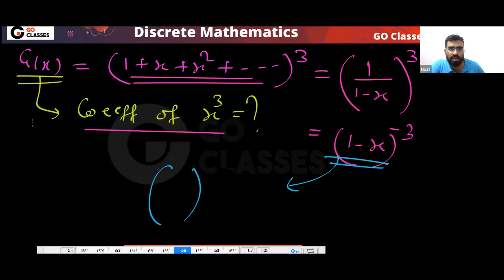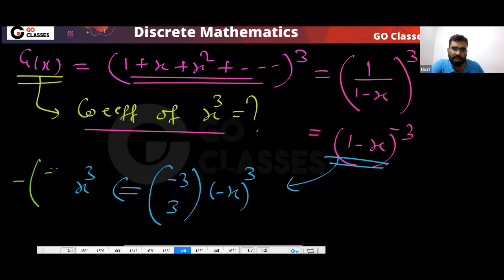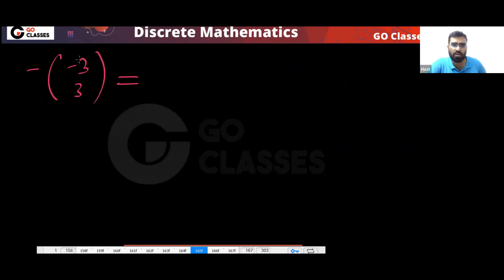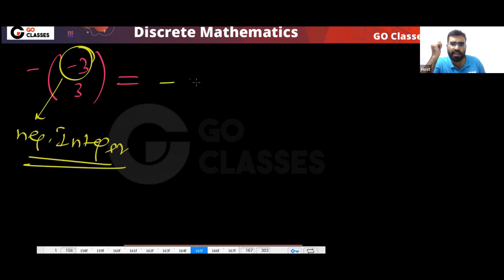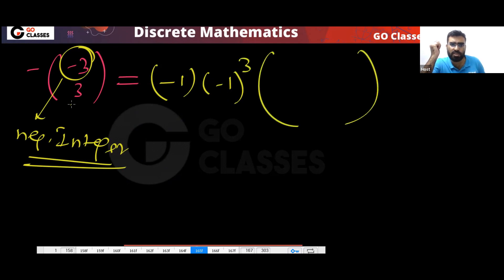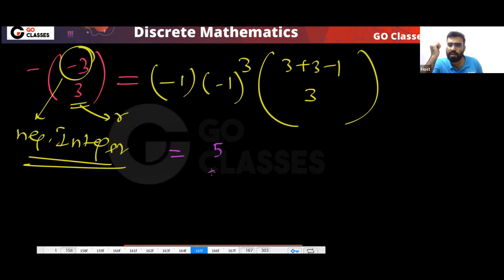In this expression, remember we have minus x here. So basically the coefficient of x cube will involve minus 3 C 3. Since this is a negative integer index, you can apply the formula: outside minus 1, another minus 1 power 3 for r, giving 3 plus 3 minus 1 C 3, which is 5 C 3.